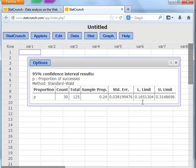0.1651 is the lower limit. 0.3149 is the upper limit. And we say we're 95% confident that the proportion of all COS students that own an iPhone is between 0.1651 and 0.3149. Let's move on to the second problem.